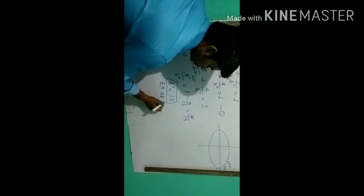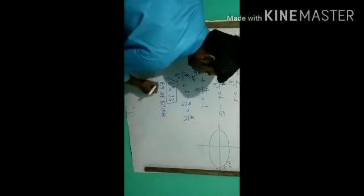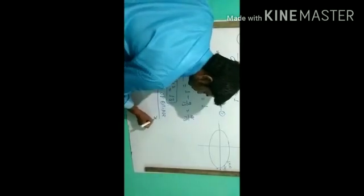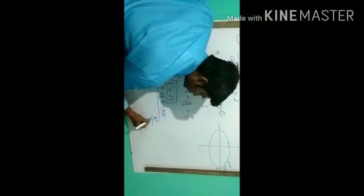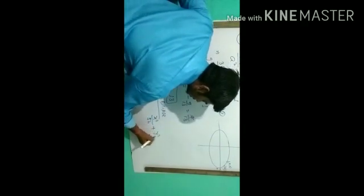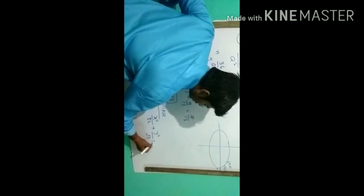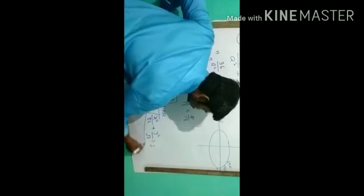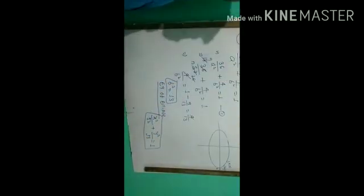The equation of the ellipse will be x²/a² where a² is 52, plus y²/b² where b² is 13, equals 1. This is the equation of the ellipse for question 20.